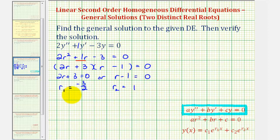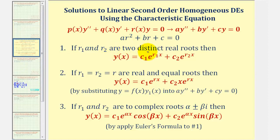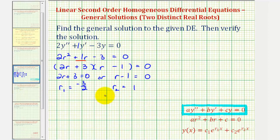Notice here we have two distinct real solutions to the characteristic equation, also called characteristic values. It's important to recognize this because it affects the form of the general solution. Because we have two distinct real roots, this is the form of the general solution. If we have two real and equal roots, this is the form — notice the extra factor of x. If we have two complex roots, this is the form. But again, because we have two distinct real roots, the general solution will be y of x in this form.